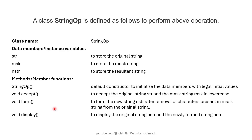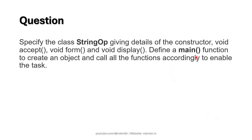These are the specifications of the class StringOp. The class name is StringOp. We have three data members: str to store the original string, msk to store the mask string, and nstr to store the resultant string. We also have a default constructor, a void accept method to accept the original and mask strings in lowercase, a void form method to form the new string after removal of characters present in the mask string, and a void display method to display the original and newly formed string.